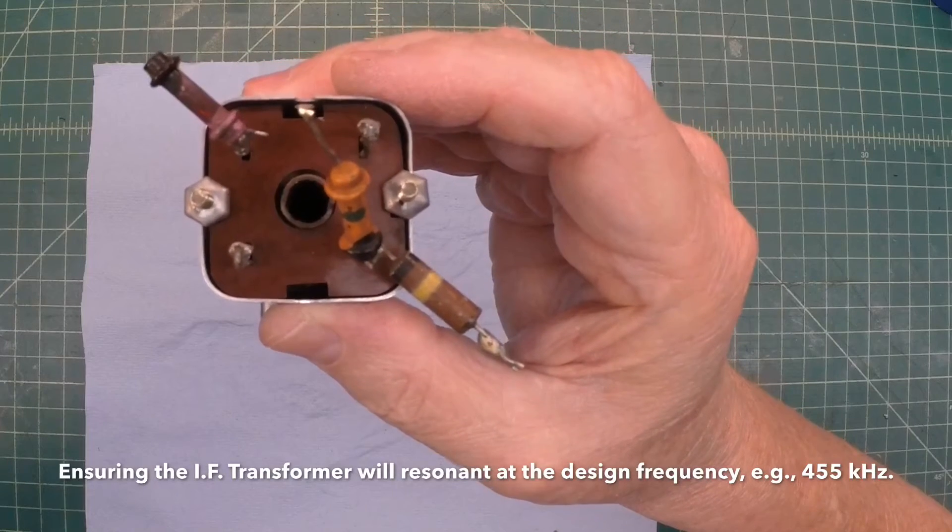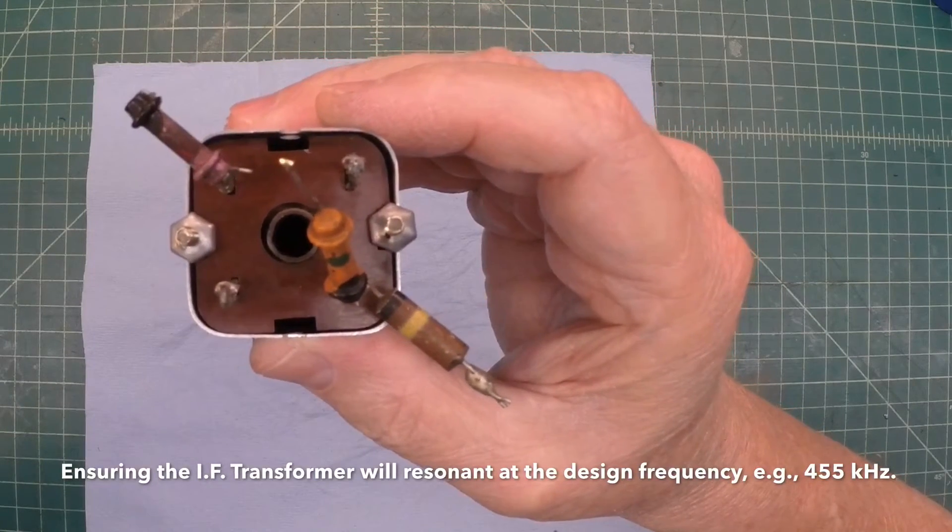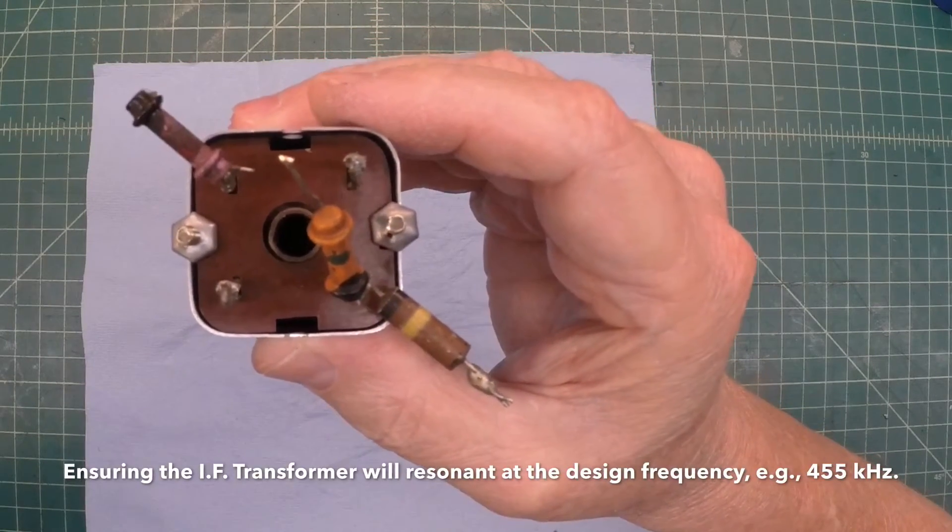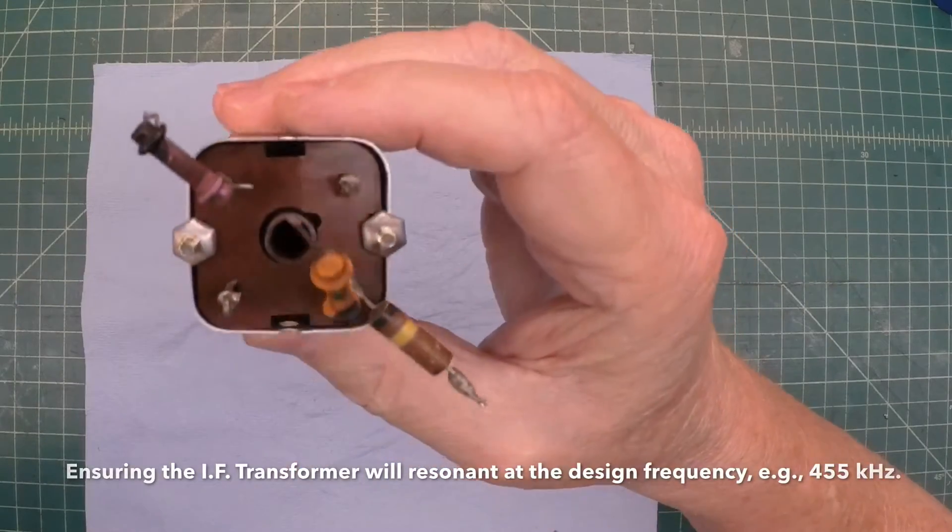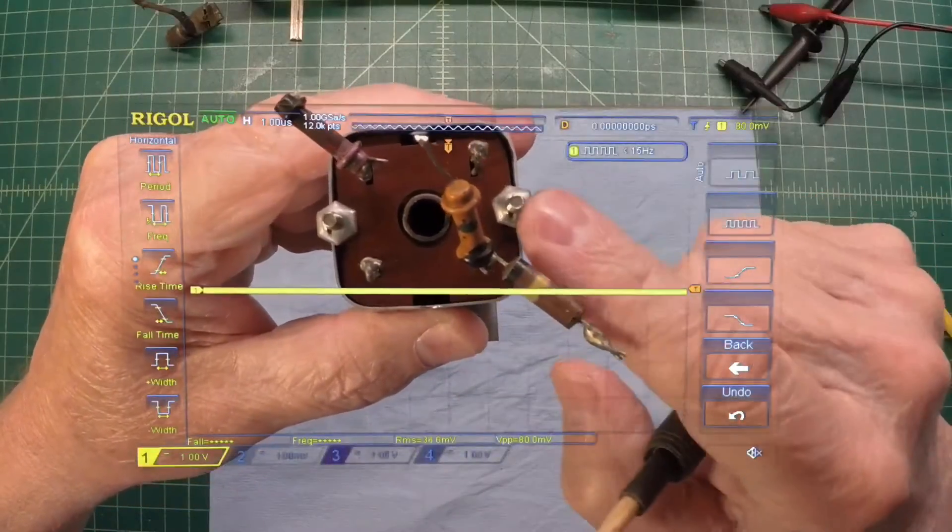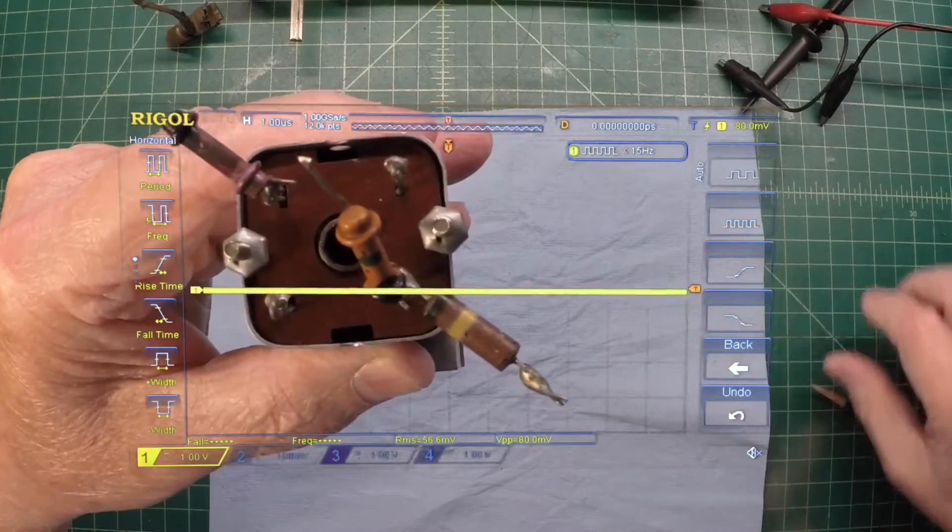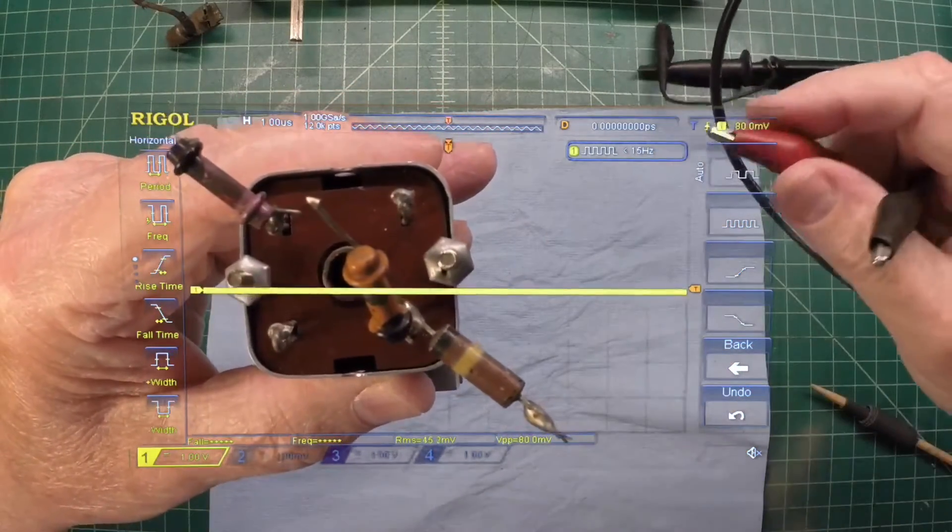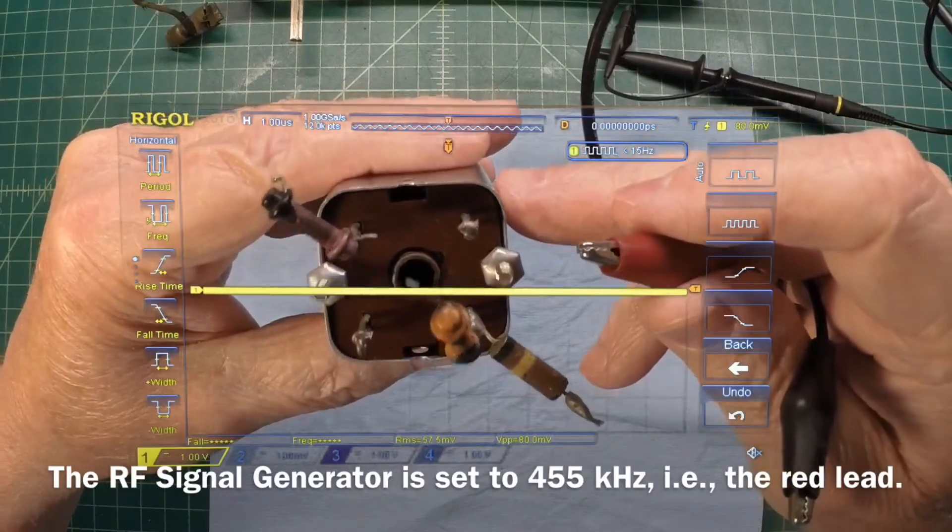So let me just walk you back through that and we'll do a preliminary alignment here to get back to the IF at 455 kilocycles. Let's go ahead and get everything hooked up here to the transformer. Keep a close eye here on the scope itself.